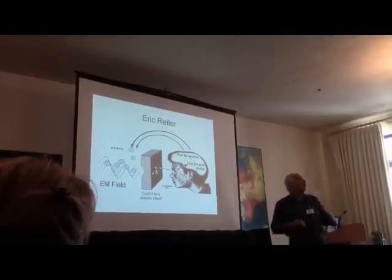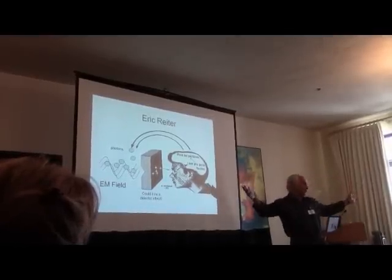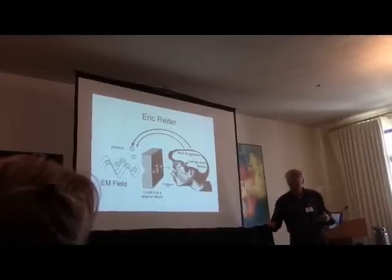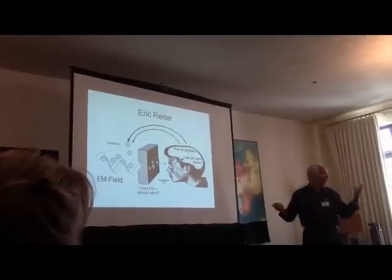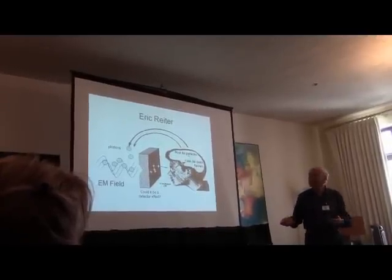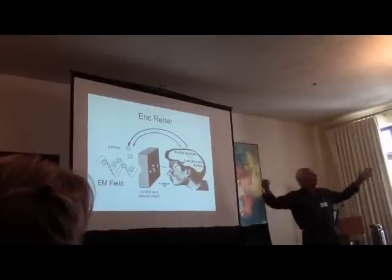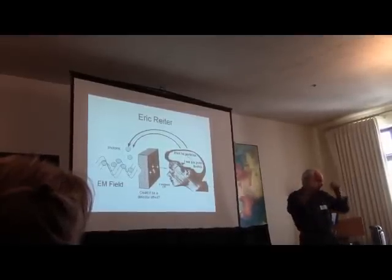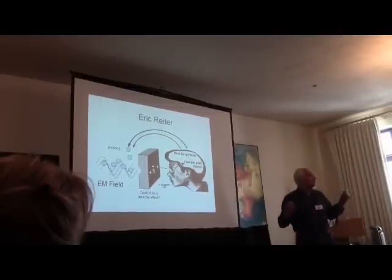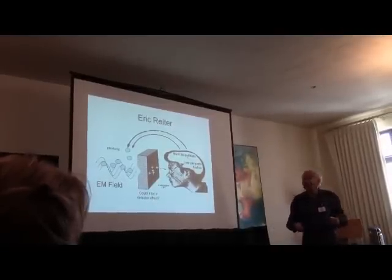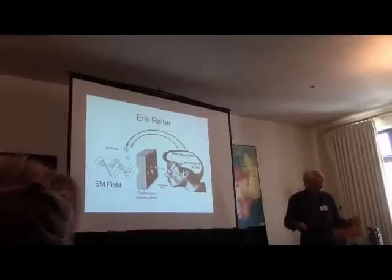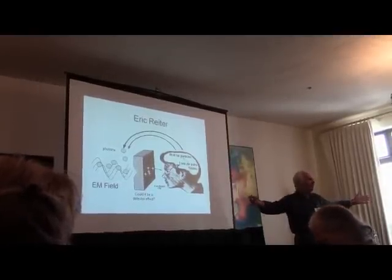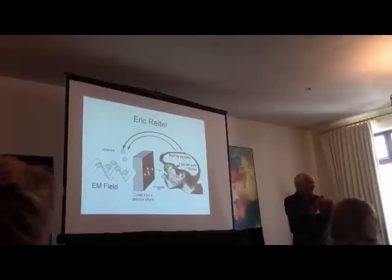The problem is that the wavelength is very large — about a thousand times larger than the atoms. The people that did these first experiments, Einstein and his contemporaries, asked: how can a huge electromagnetic wave be absorbed by a tiny atom that's a thousand times smaller? And the answer was: it can't.